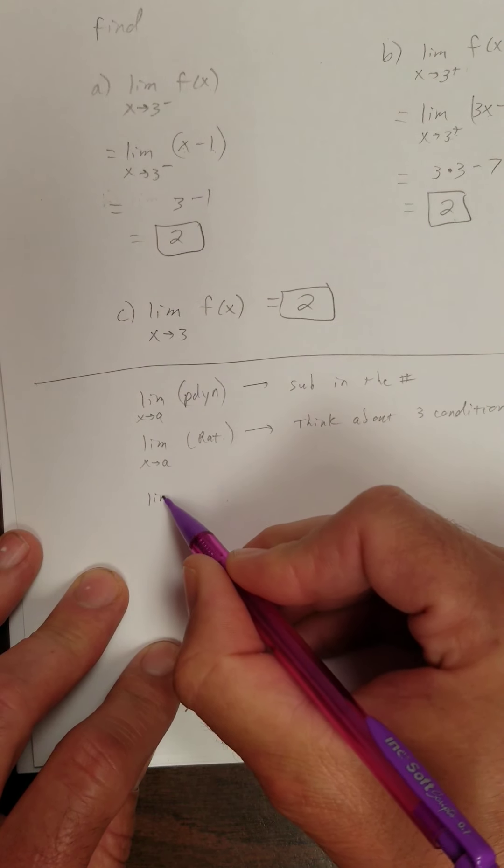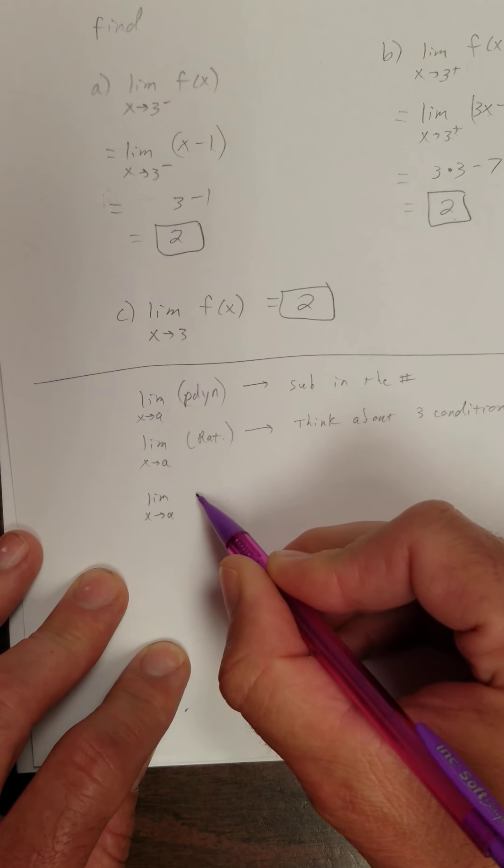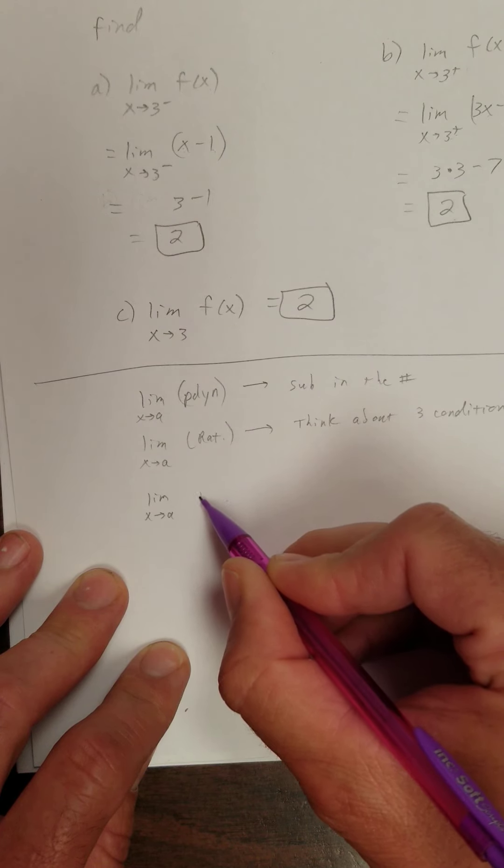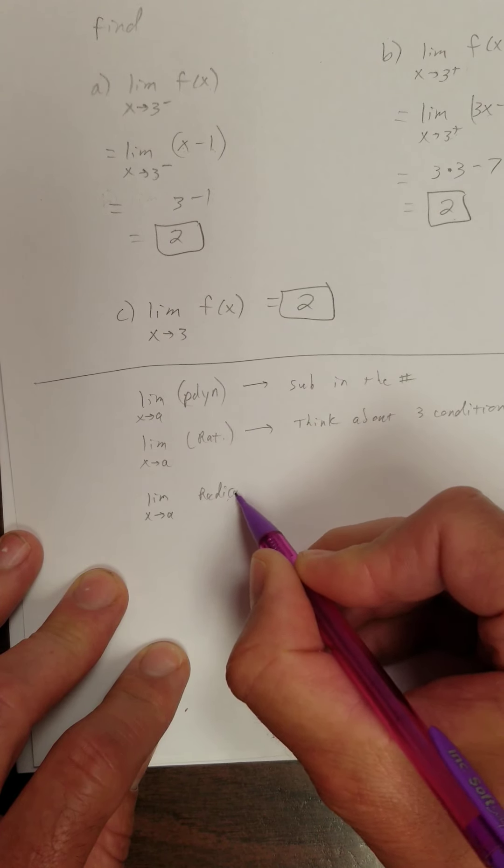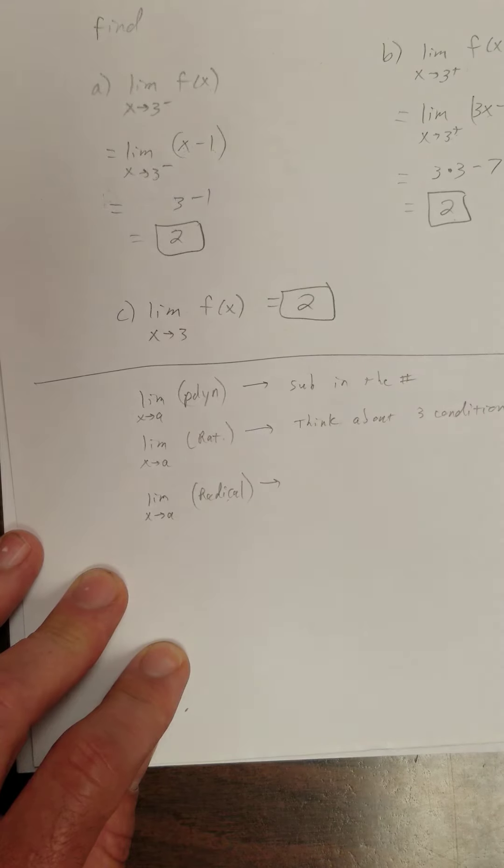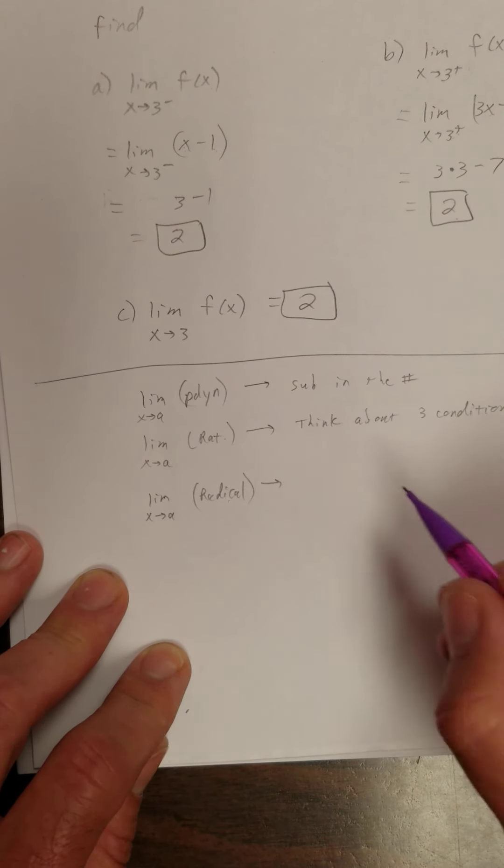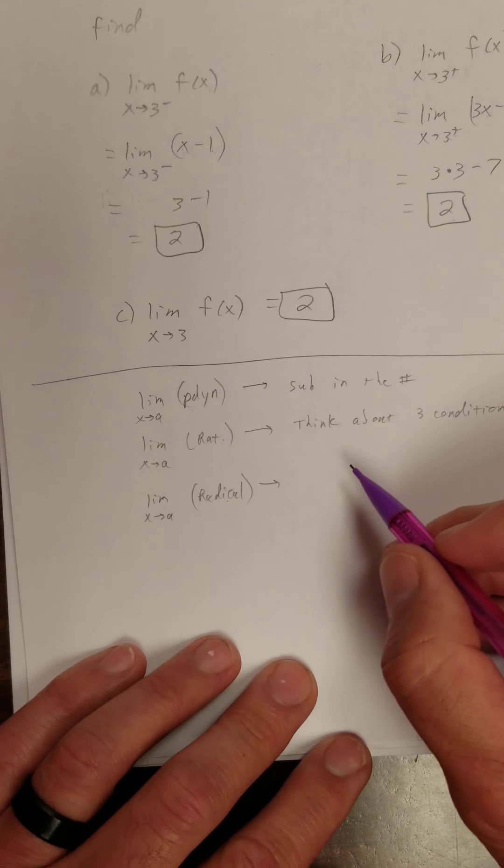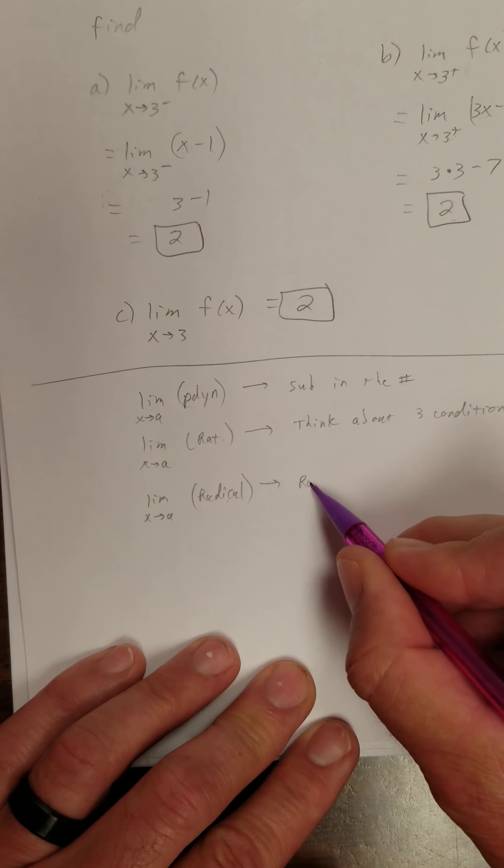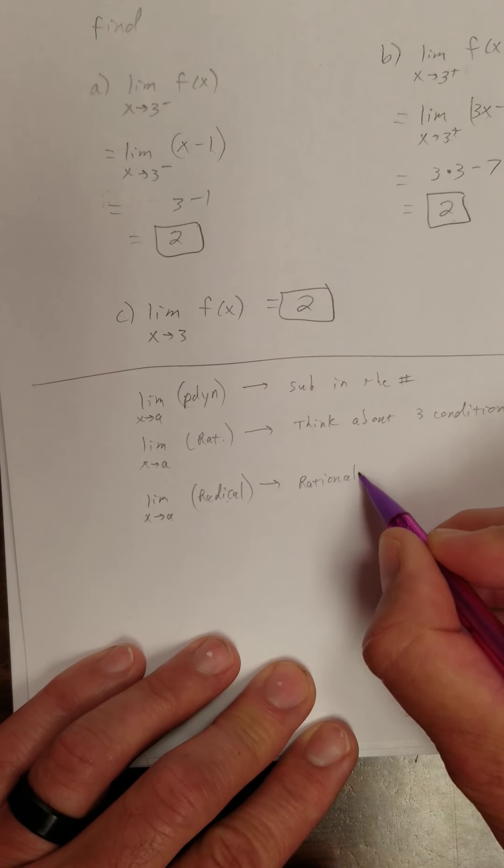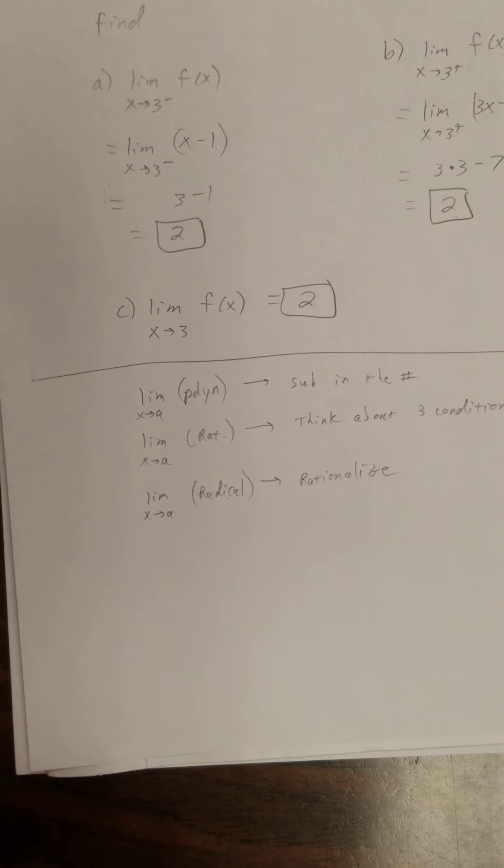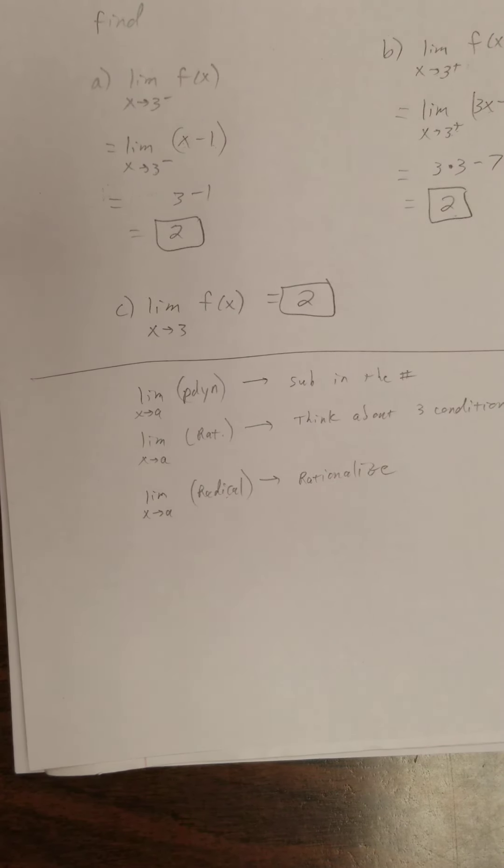How about the limit as x approaches a of a function with a radical? Now we try to evaluate that radical first, just how it is. And if we don't get anywhere, we rationalize. We rationalize the numerator, denominator, by multiplying by the conjugate.